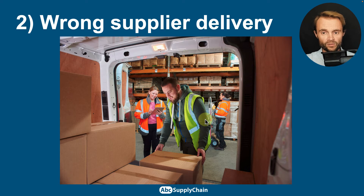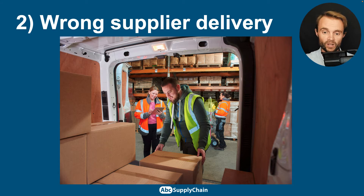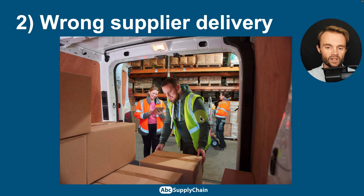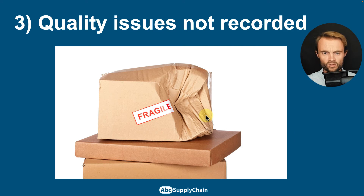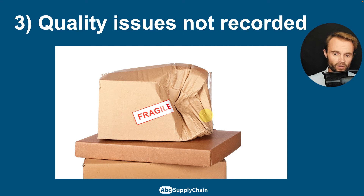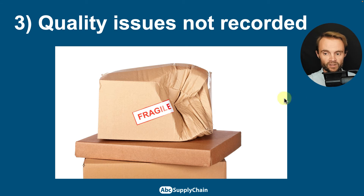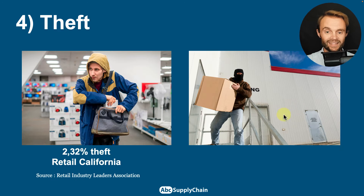The second reason is wrong supplier delivery — basically, you don't receive the right quantity or the right product. You should have a clear process to double-check the quality of every delivery. The third reason is quality issues not recorded. You may have a product that is broken or has packaging issues — for example, in the cosmetic or retail industry. You have to make sure you record all these quality issues in your system to keep the right quantities aligned with your IT records.